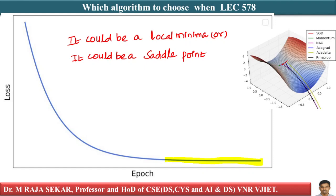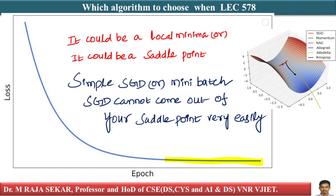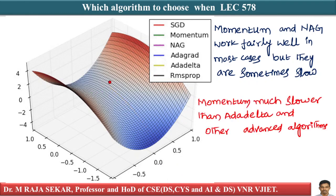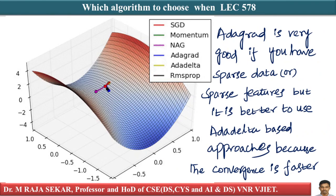Simple SGD or mini-batch SGD cannot come out of a saddle point very easily. Momentum and NAG work fairly well in most cases. They work very well in most cases but are sometimes slow — if you notice this diagram, momentum is much slower than AdaDelta and other advanced algorithms. They work well in many cases but are typically slower, especially when you have sparse data.